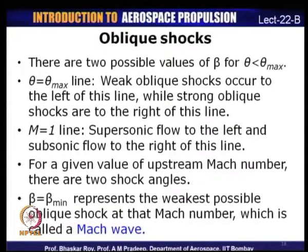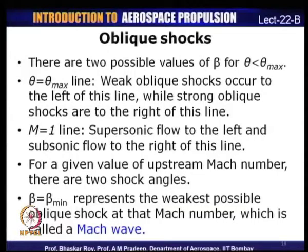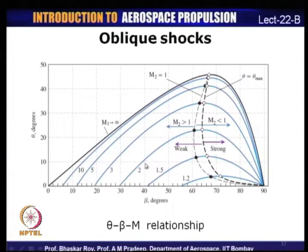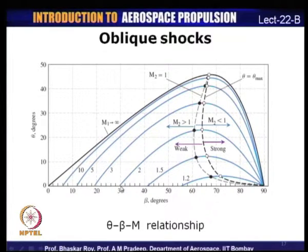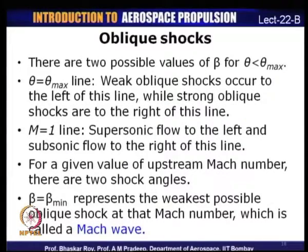For any given value of Mach number and deflection angle, β = β_min (minimum beta) represents the weakest possible oblique shock at that Mach number, which is basically known as a Mach wave. For Mach 2, the minimum β is about 30 degrees. These very weak shock waves at the minimum angle are known as Mach waves.